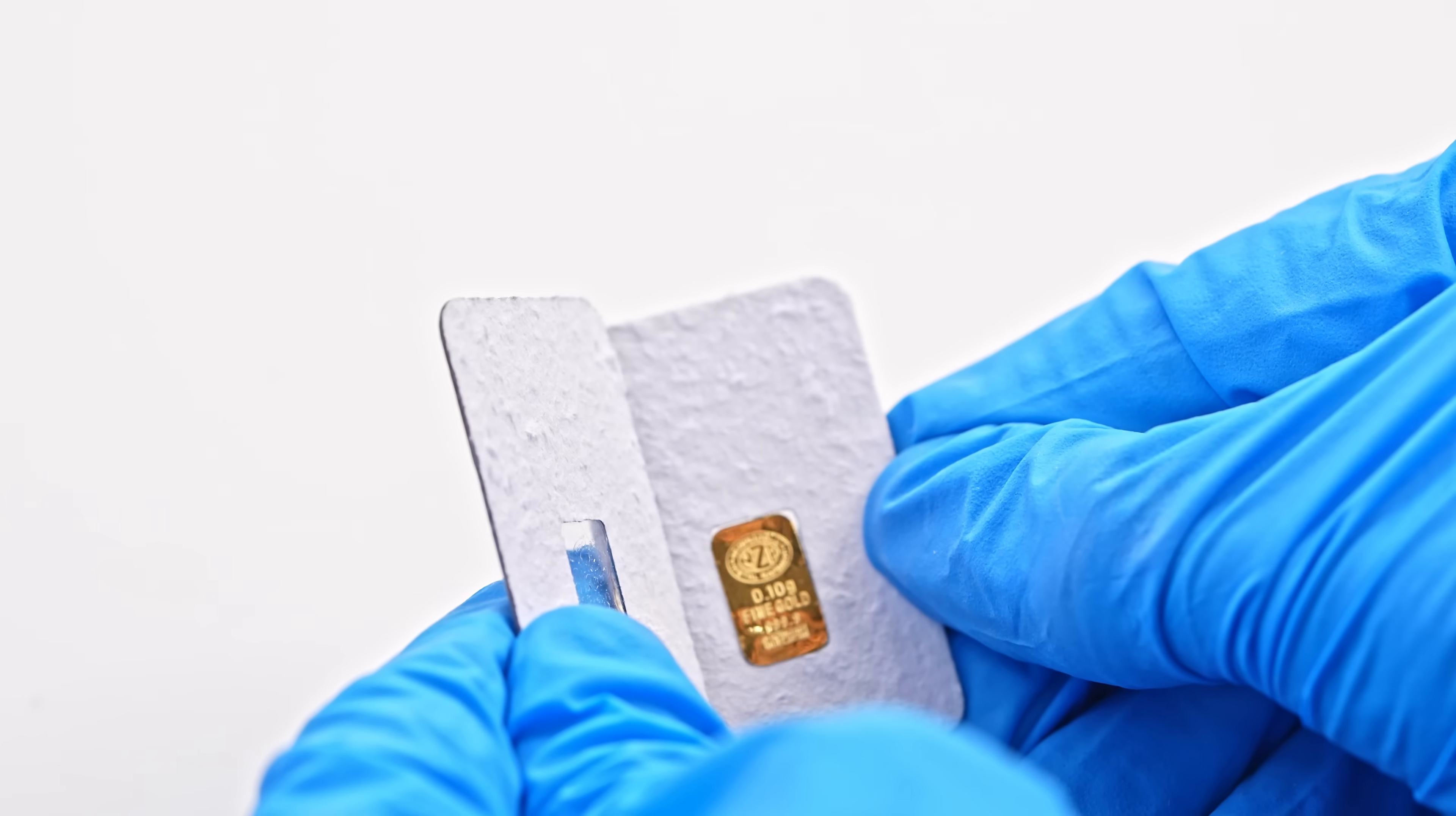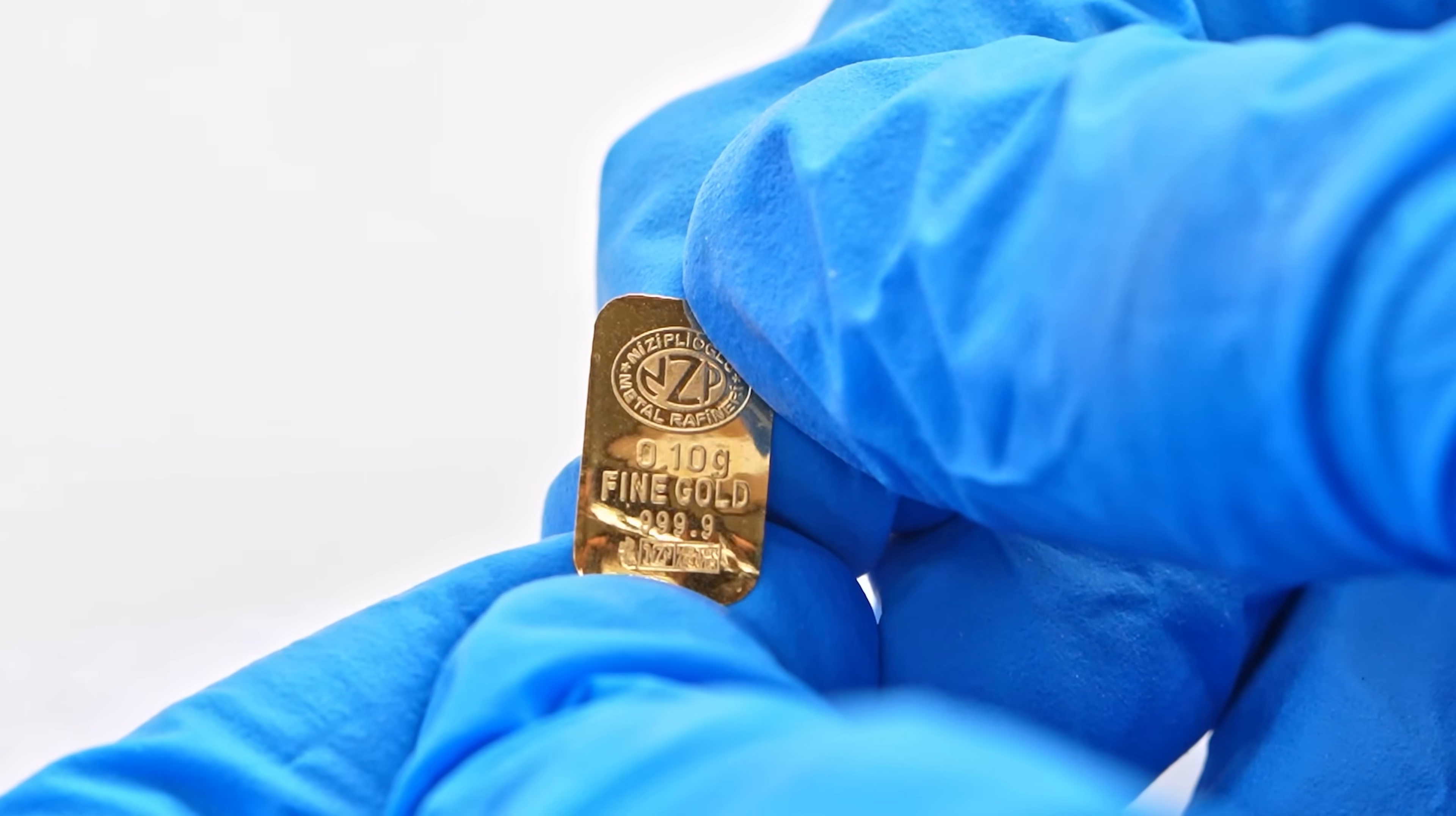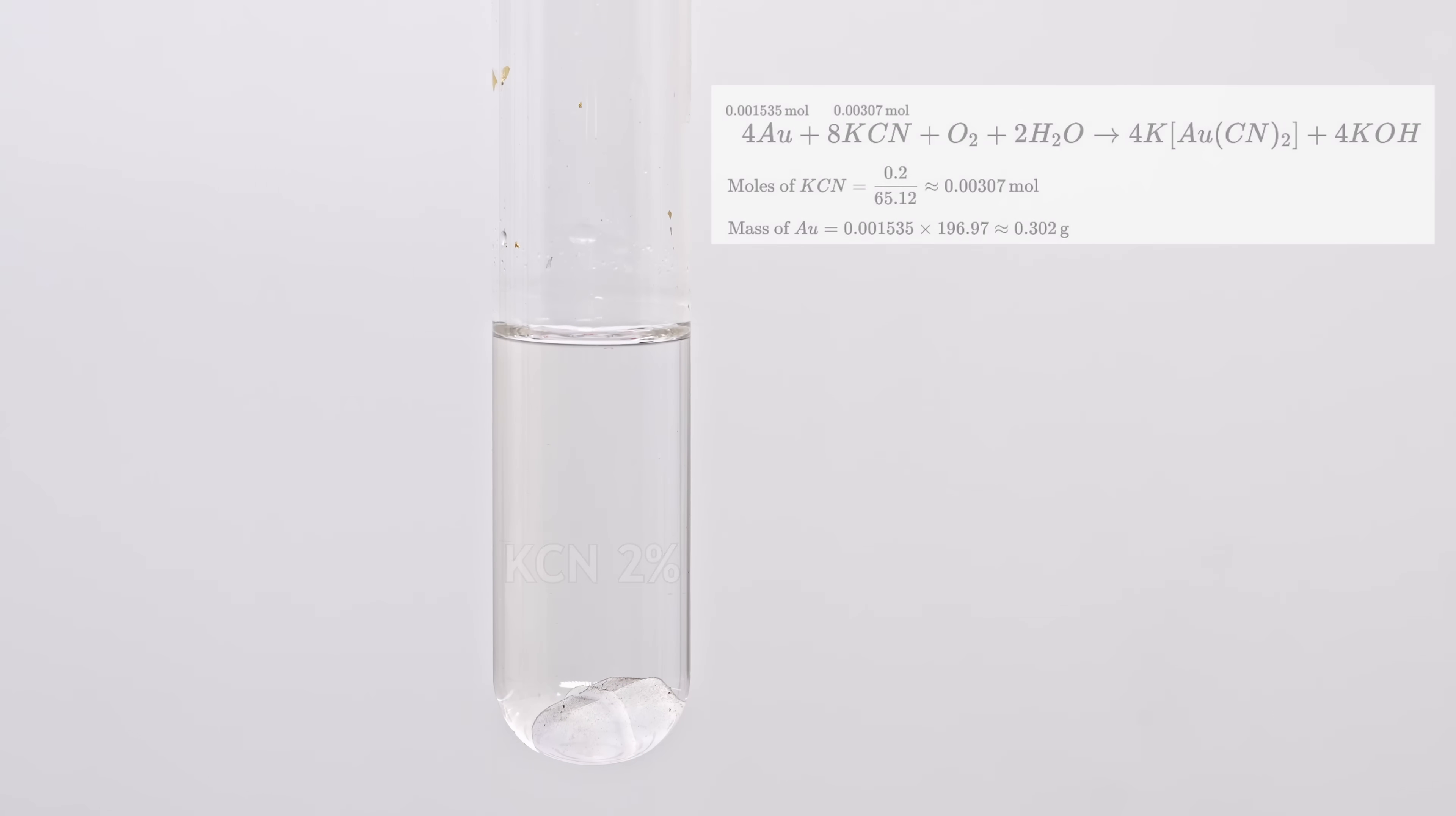Now let's try to dissolve not foil in potassium cyanide, but this gold ingot. This sample of gold is 100 times thicker than foil, and 7 times heavier. This is 100 milligrams of pure gold. And now I'll place this ingot in 10 milliliters of a 2% solution of potassium cyanide, through which I'll pass pure oxygen. Based on the reaction equation, this amount of gold should dissolve in this amount of solution.